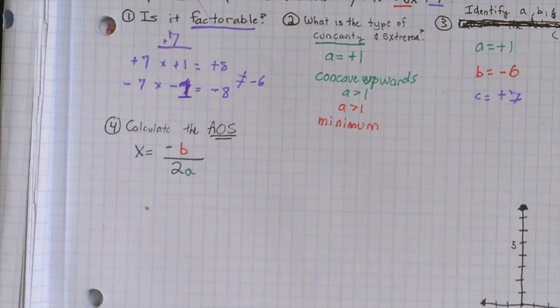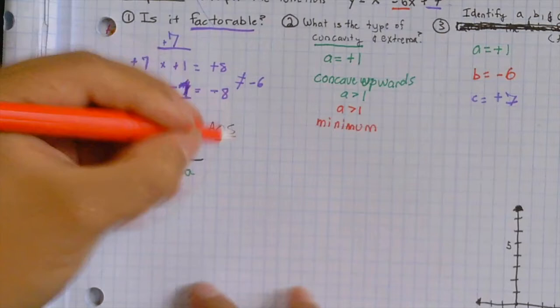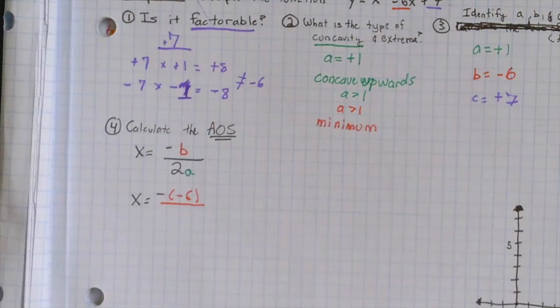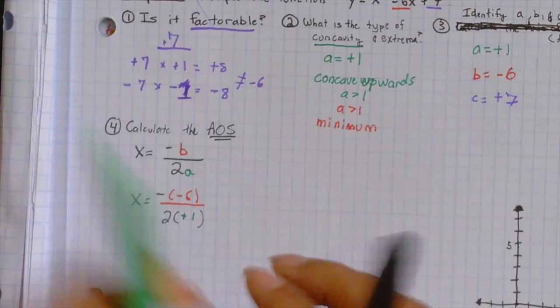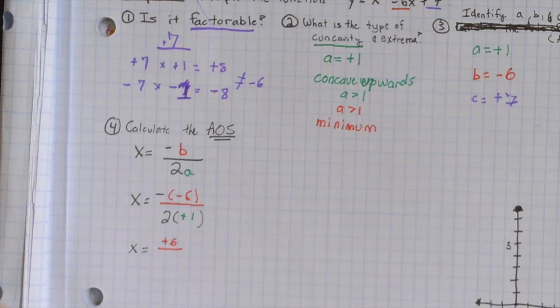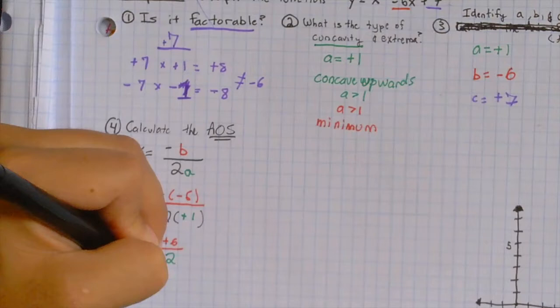So, we have now x equals negative 6. Again, because b equals negative 6, we just make that direct substitution. So, always remember you're having that negative 6 in there. And we divide that by 2 times the value of a, which is positive 1. And now, we just solve. x equals negative times a negative is a positive 6. And 2 times positive 1 is 2. And when we make our final simplified response, 6 over 2 is 3. This is our axis of symmetry.